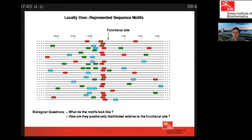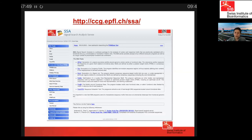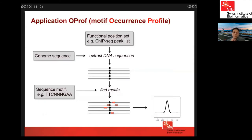This is the SSA web interface, which looks similar to the ChIP-seq interface — from the left side menu you access tools and documentation. Today we will use OPROF, which stands for motif occurrence profile, for our motif enrichment analysis. OPROF takes as input a functional position set with peak positions, extracts sequences around these peaks, and also takes as input a sequence motif that can be described as a consensus sequence or as a position scoring matrix.